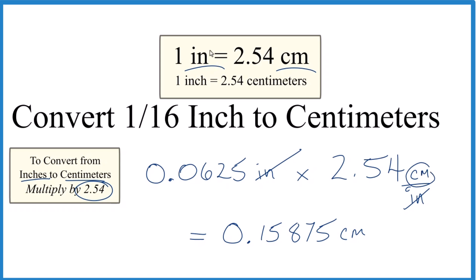You might also note that when we go from inches to centimeters, we'll end up with a larger number. So 0.15875, that is larger than 0.0625. And that means that we converted 1/16th of an inch to centimeters correctly here.